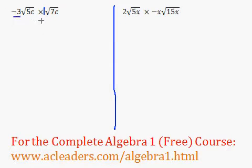There's a hidden one out here. So negative 3 times 1 is just negative 3 because we always multiply outside with outside. Then inside with inside. 5c times 7c, well 5 times 7 is 35 and c times c is c squared.